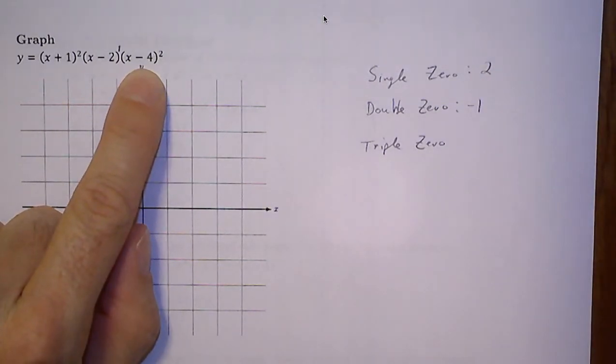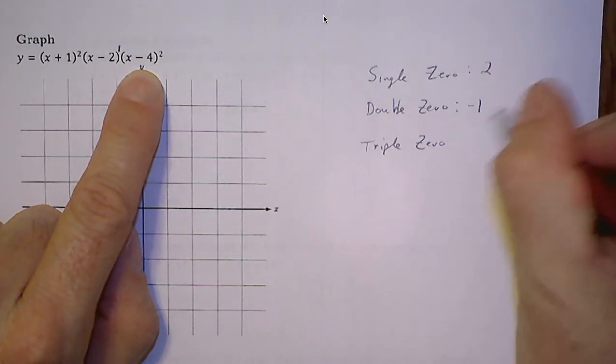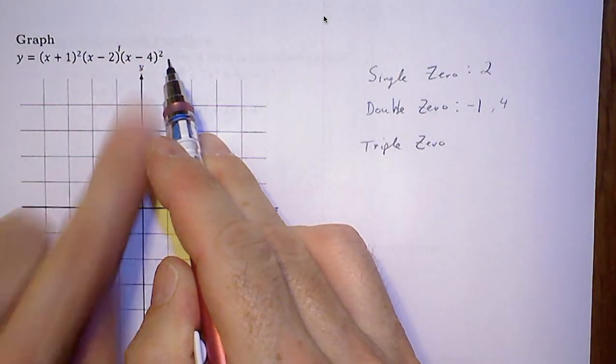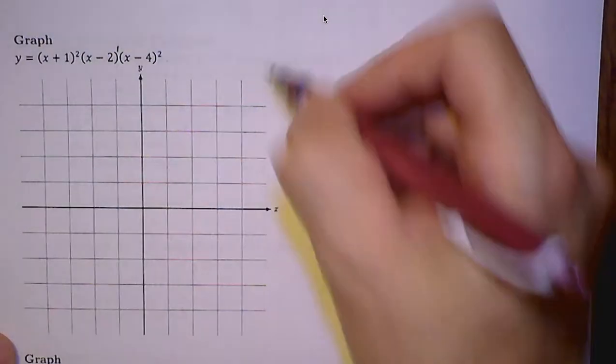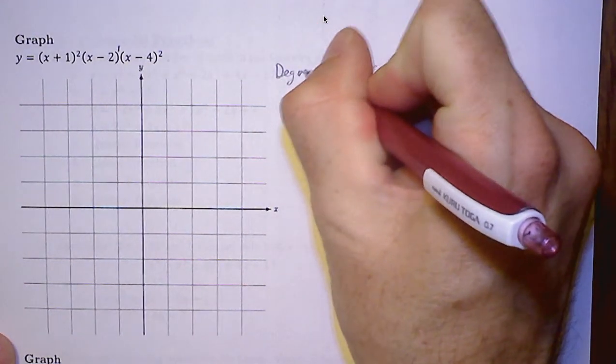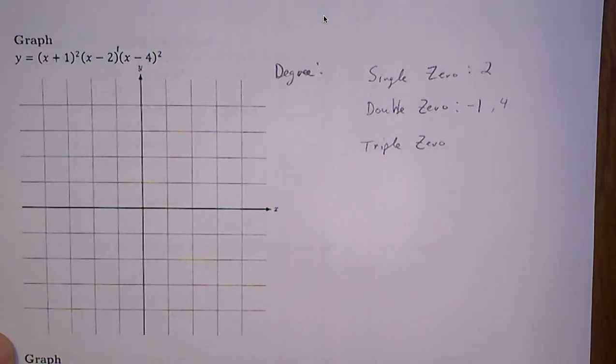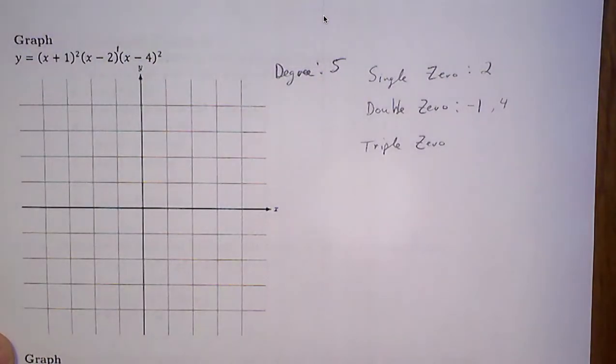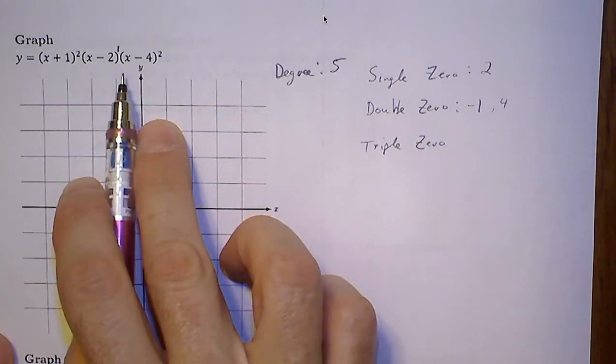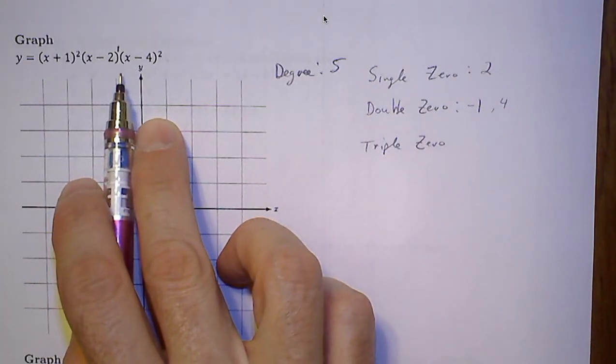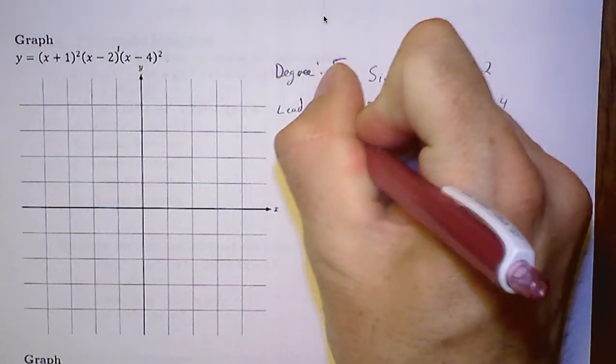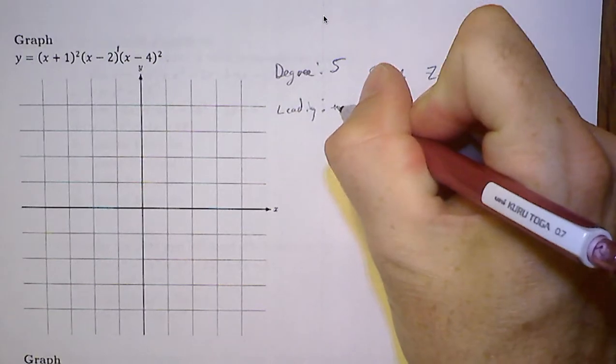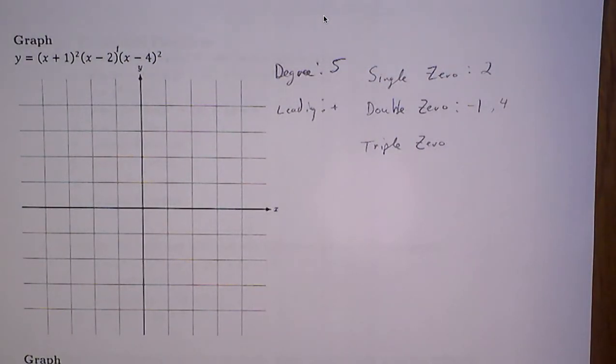A double zero when this factor is 0, and that is 4. It's a double zero because my exponent's 2. My degree of my equation is 5. Simply add the exponents. If I were to multiply this out, would the leading coefficient be positive or negative? It is positive 1.